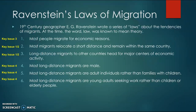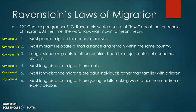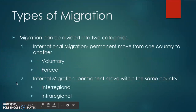For Ravenstein's Laws of Migration, we're focusing on numbers two and three. Number two: most migrants relocate a short distance and remain within the same country — we'll talk about interregional and intraregional migration and you'll see the connection. Number three: long-distance migrants to other countries head for major centers of economic activity. These two laws help answer where migrants are distributed.